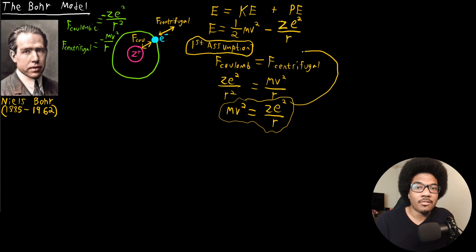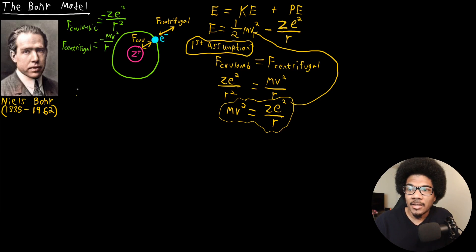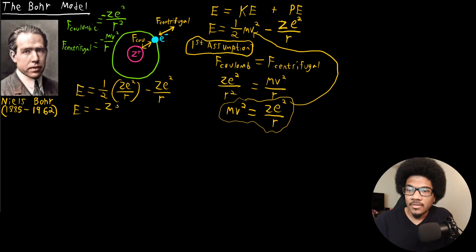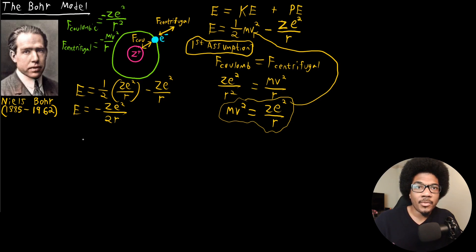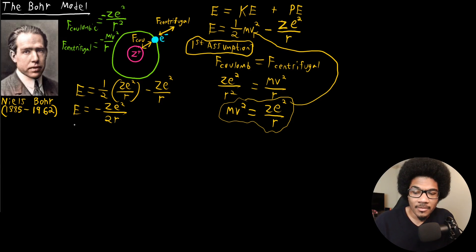We can plug this expression back into our energy expression to get like terms. Doing that, E equals one half times ZE² over R, minus ZE² over R. That leaves us with an energy expression of negative ZE² over 2R. But we're not done yet — this doesn't fully solve the electron death spiral problem because the energy can't be defined exactly for every point in space. So Bohr took a cue from Planck's law, where energy was quantized in discrete whole-number integer pockets, and assumed something similar.